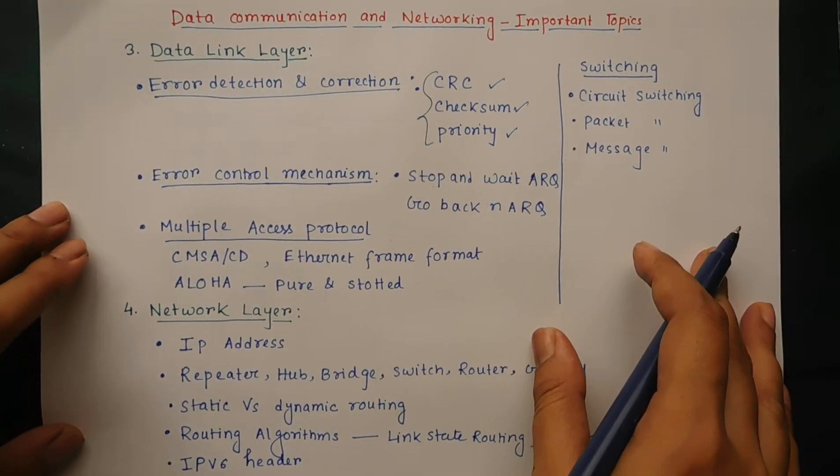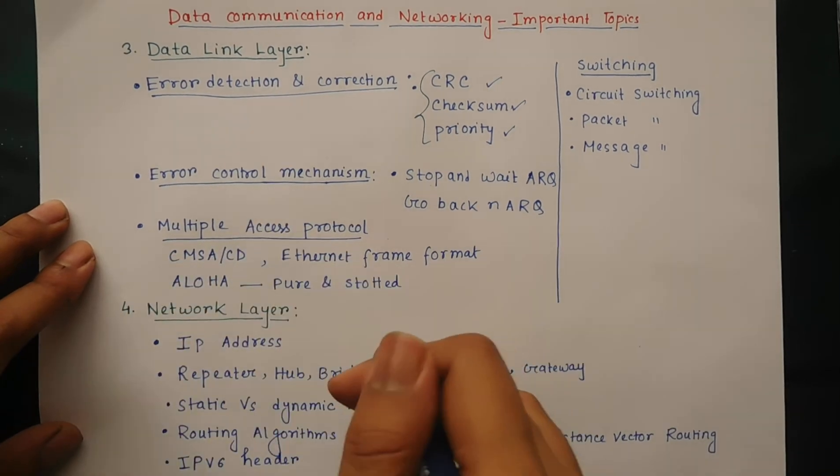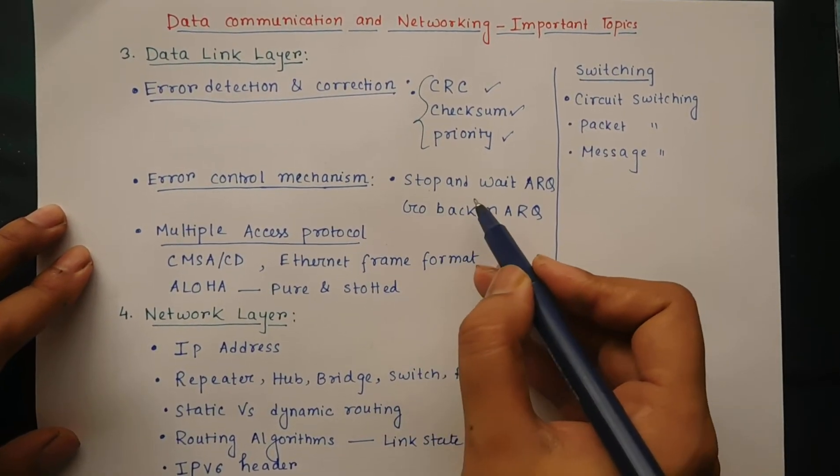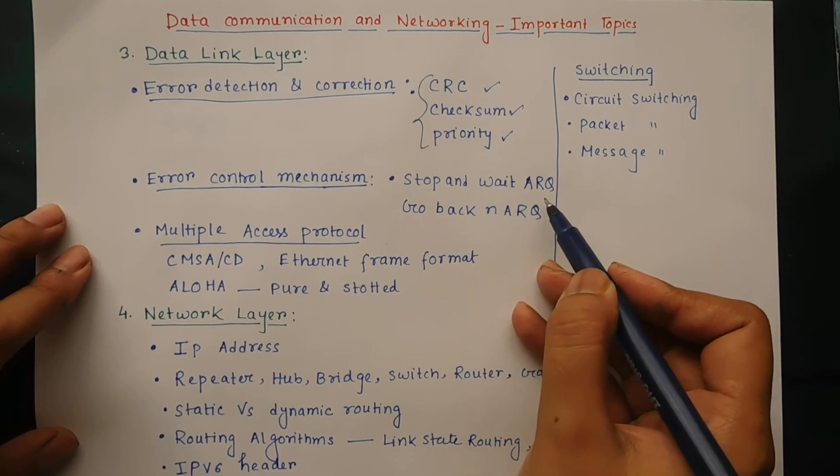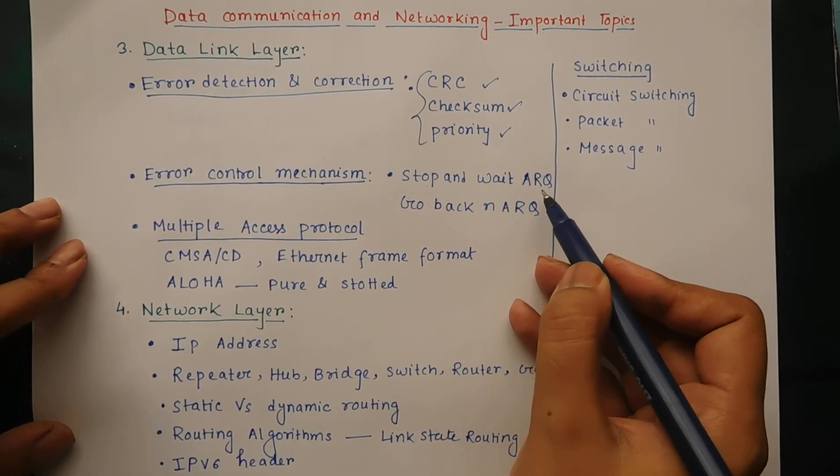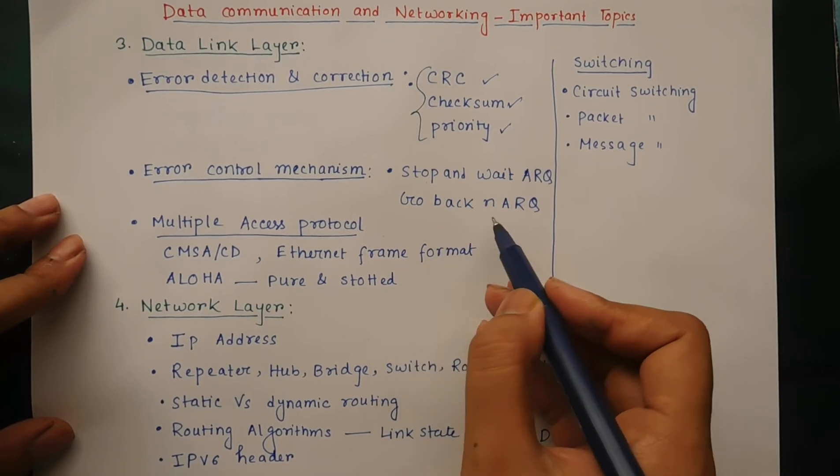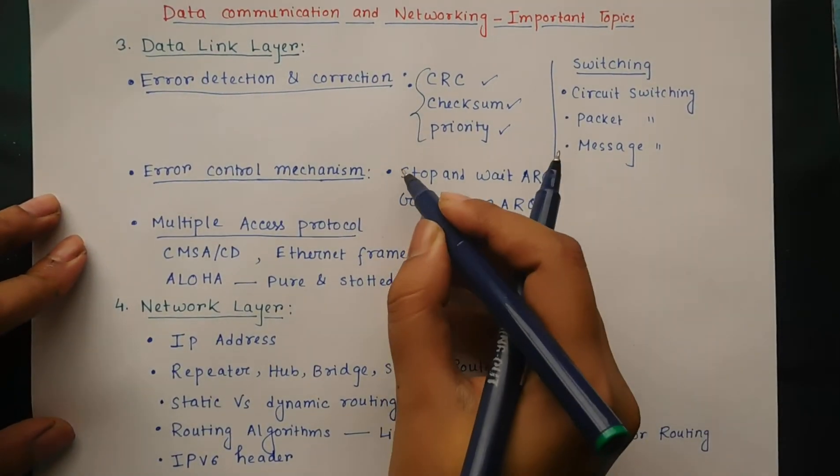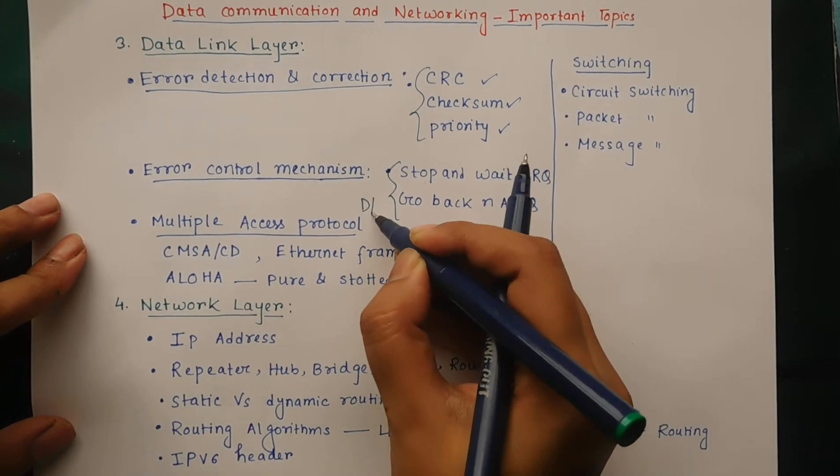The next is error control mechanism. This is very important. The mechanisms are stop and wait ARQ (automatic repeat request) and go back N ARQ. Here you read the difference between these two mechanisms.